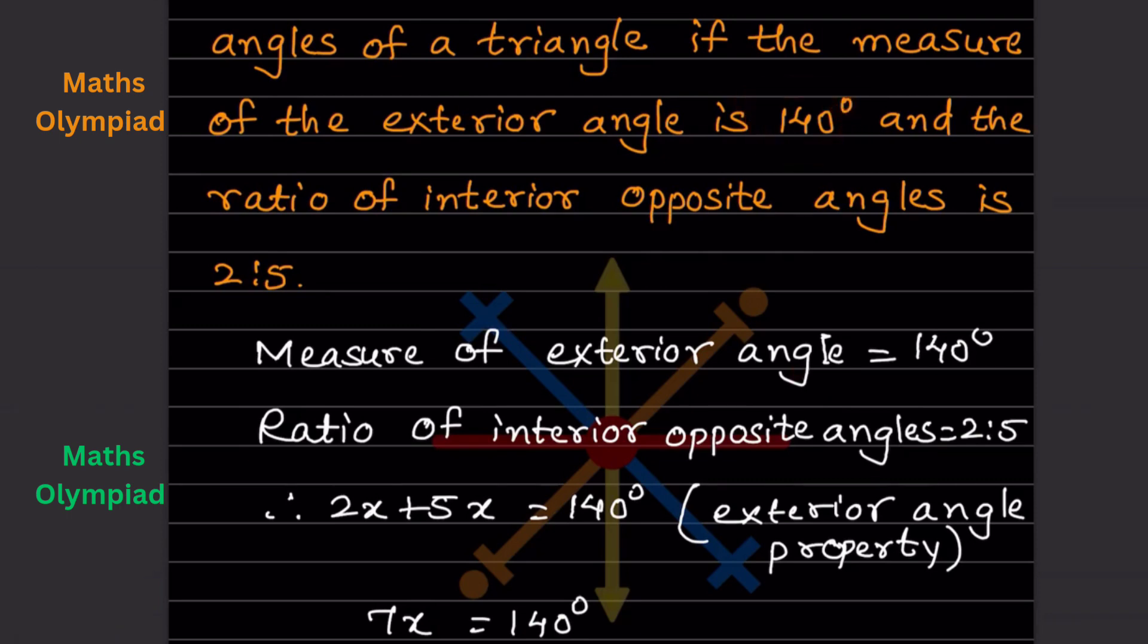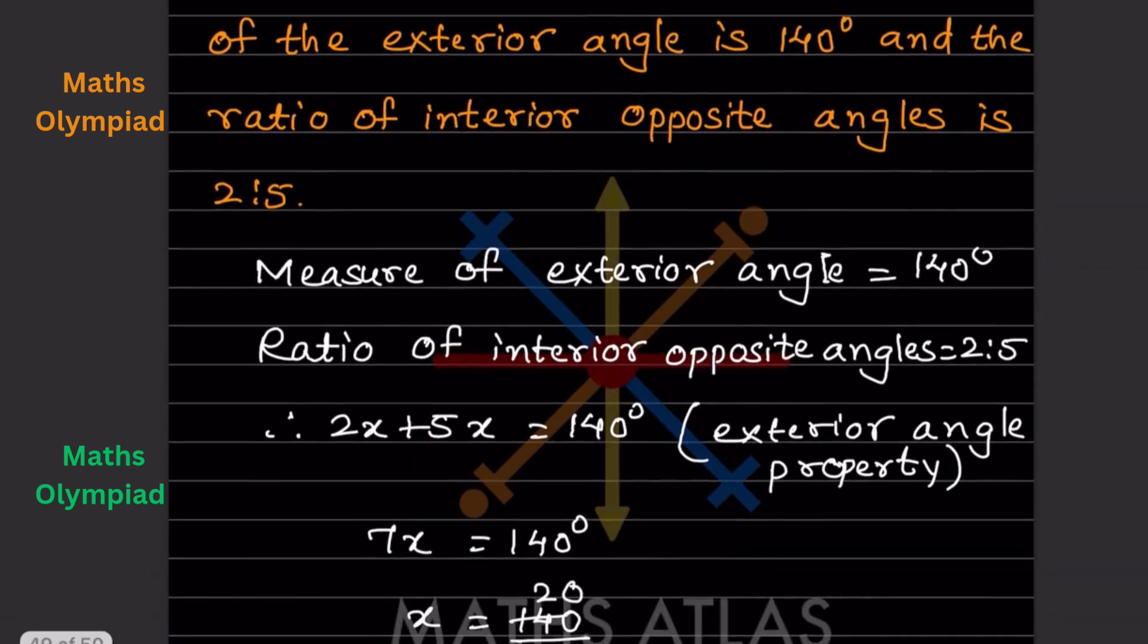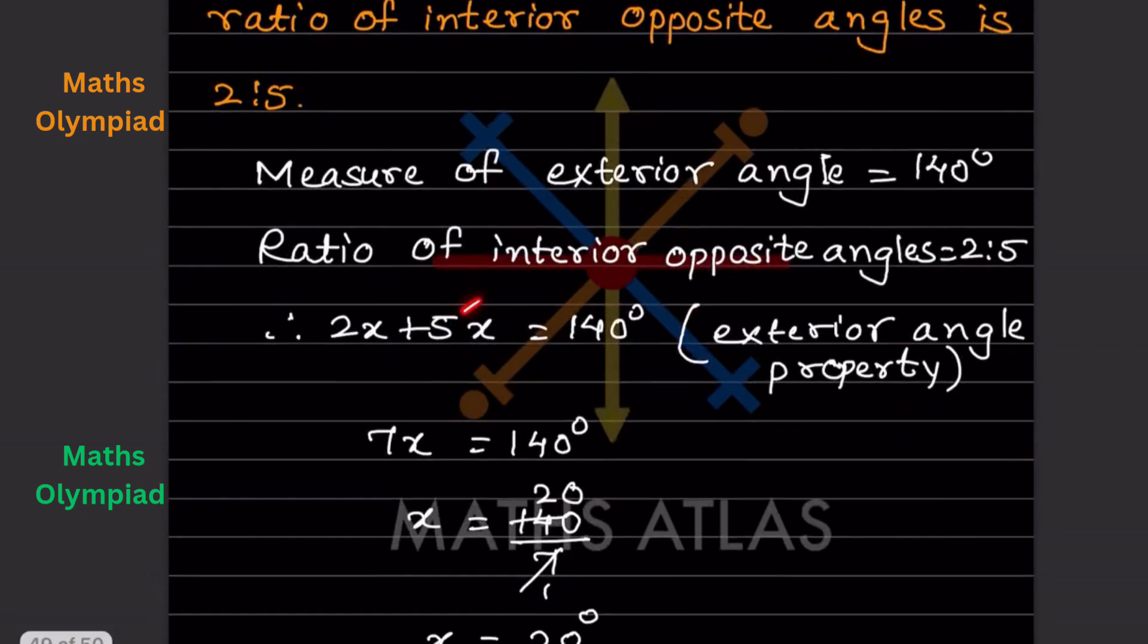When the ratio is given, we can represent the angles as 2x and 5x. Adding them gives us 2x plus 5x equals 140 according to the exterior angle property. So 7x equals 140.